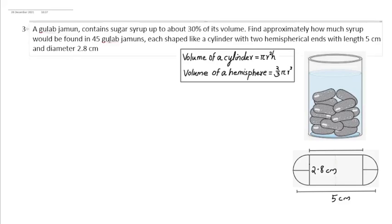A gulab jamun contains sugar syrup up to about 30% of its volume. Find approximately how much syrup would be found in 45 gulab jamuns, each shaped like a cylinder with two hemispherical ends with length 5 cm and diameter 2.8 cm. These gulab jamuns are kept moist in the sugar syrup. Each of these contains 30% of its volume of sugar syrup.